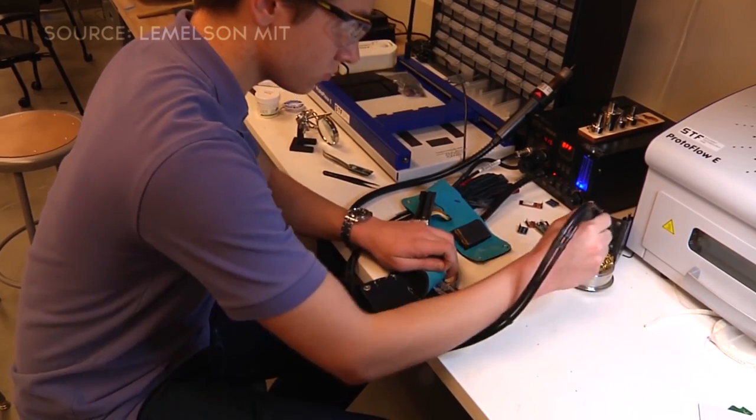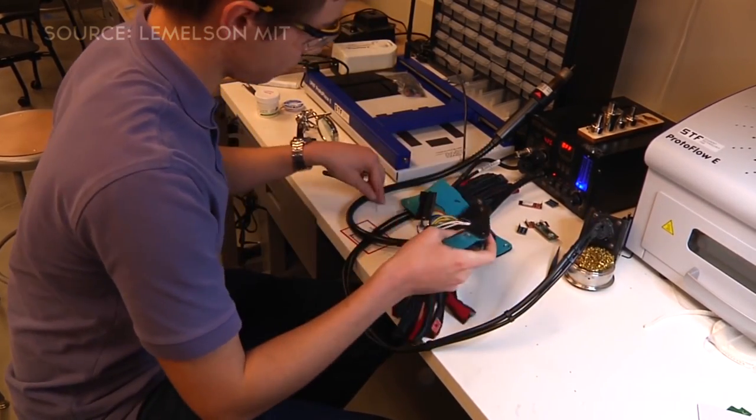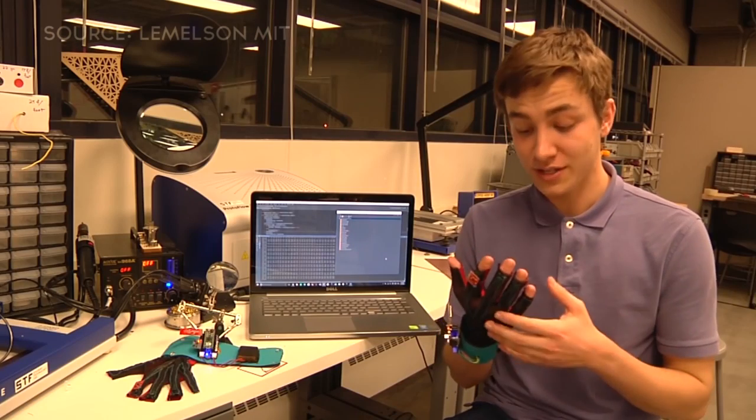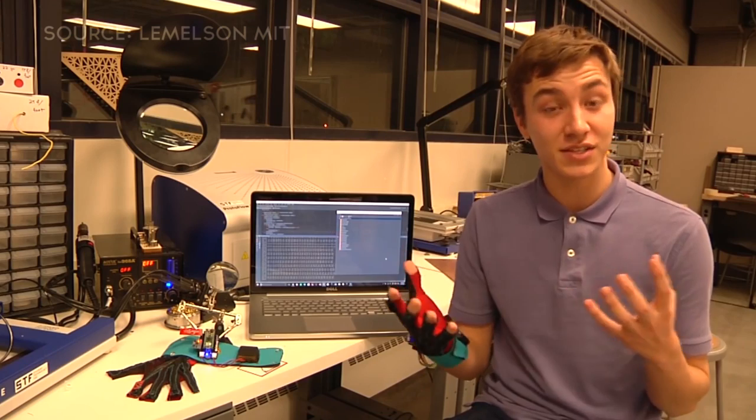What we decided to do is create gloves that translate sign language into text and speech. The gloves work by utilizing sensors on the hand and wrist to measure hand position and hand movement. The gloves then send this data to the computer via Bluetooth for processing.